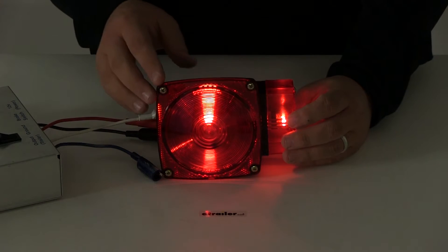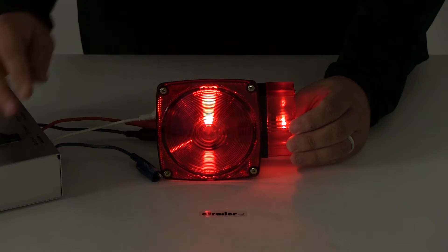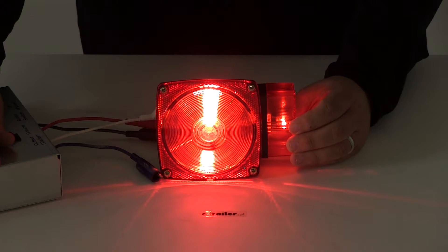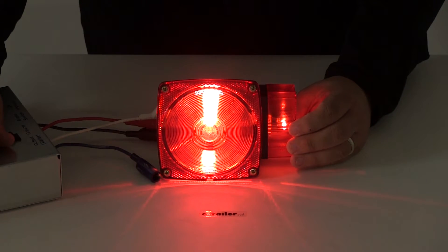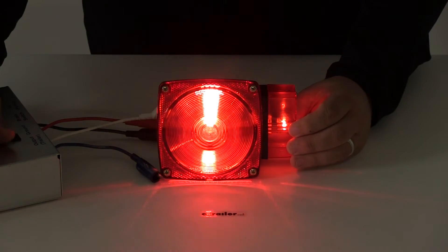You can see here that it's going to provide a nice consistent signal for the tail light function. And then when we apply our brakes, it's going to illuminate a little bit brighter for a nice consistent brake signal as well as our turn signal.